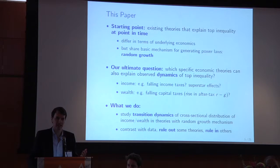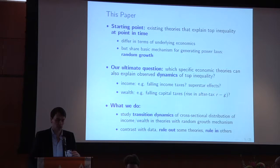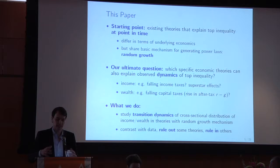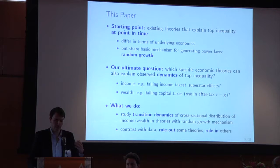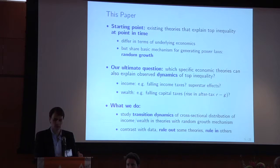Similarly for wealth, some people say the increase in top wealth inequality is all due to falling capital income taxes — what Piketty calls a rise in R minus G. We're going to ask how reasonable that is. To get at this, we study transition dynamics: the evolution of the cross-sectional distribution of income and wealth in a big class of theories with this random growth mechanism. We contrast those transition dynamics to what you see in the data — the time paths for top income and wealth shares — to rule out some economic stories and rule in others.